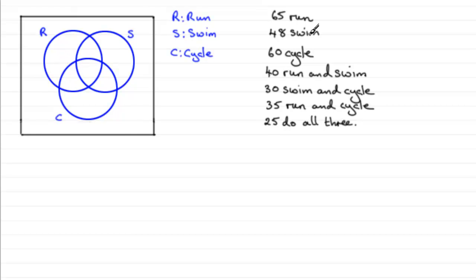And the same with the 48 that swim—that's distributed over these regions. To do questions like this, what we've got to generally do is go to the last result, 25 do all three. So we've got to put the 25 in the middle here. We can do that.